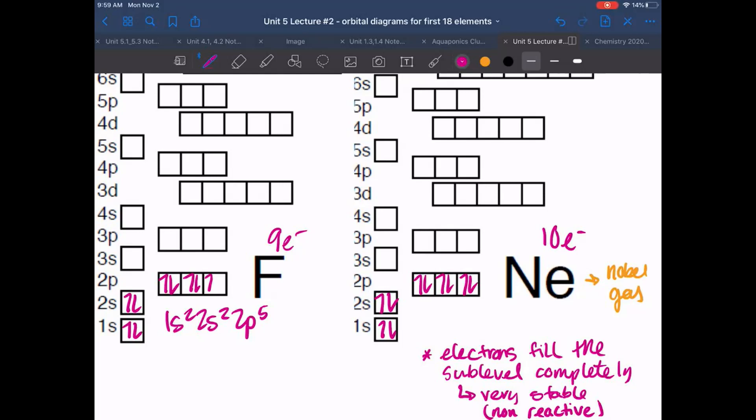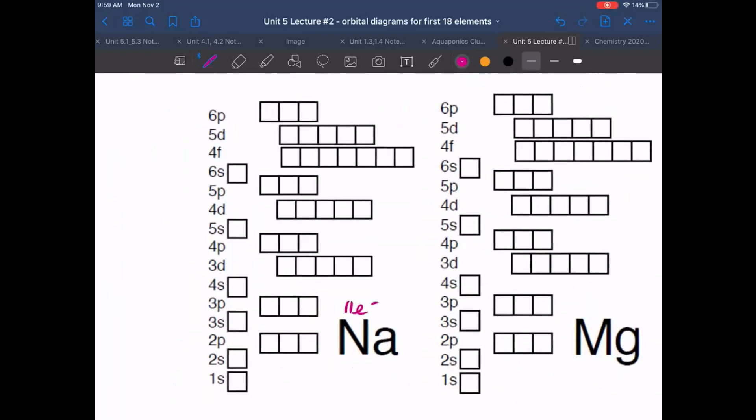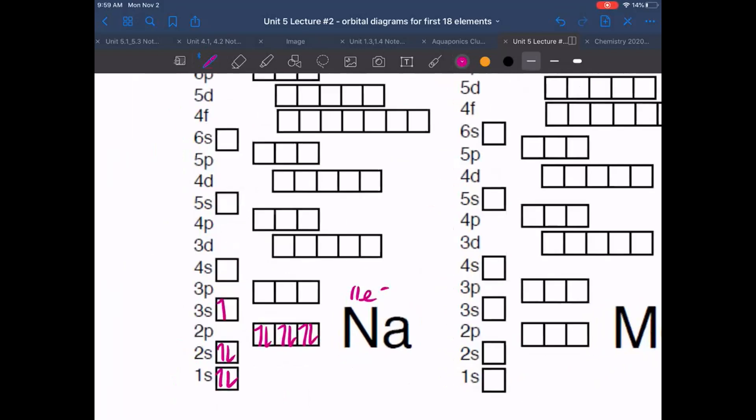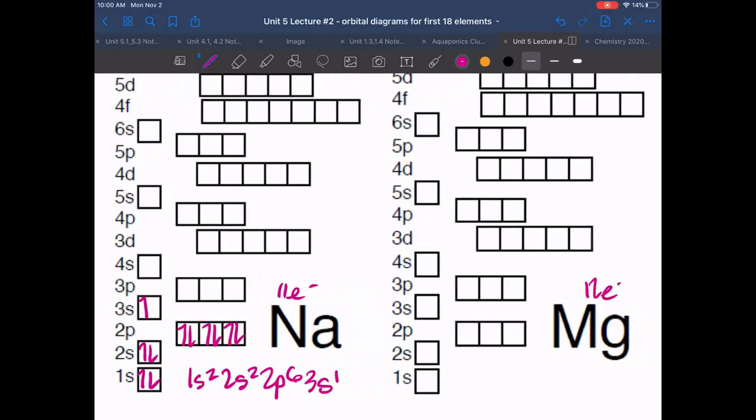Now moving over to sodium. Now we have 11 electrons. So we have one, two, three, four, five, six, seven, eight, nine, 10. The 11th one now goes to the next lowest available, that 3s. And it's going to be an up arrow. How we write this is 1s2, 2s2, 2p6, 3s1. Magnesium. 12 electrons. 1, 2, 3, 4, 5, 6, 7, 8, 9, 10, 11, 12. 1s2, 2s2, 2p6, 3s2. Do you guys see the hang of it? Kind of understand the pattern? Feels pretty much.